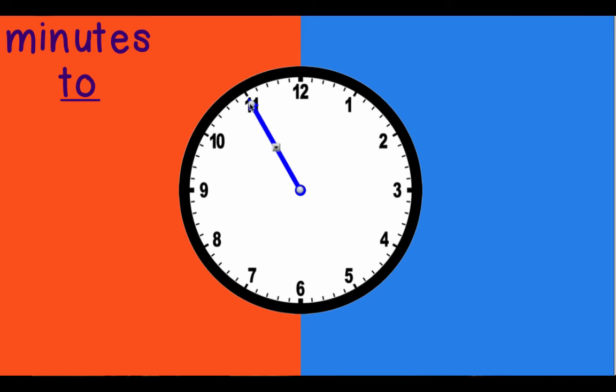So here we can see, just like we were before, we can count in lots of five. We've got one, two, three, four, five minutes to go until we get to the twelve. So the eleven really represents five minutes to the next hour.